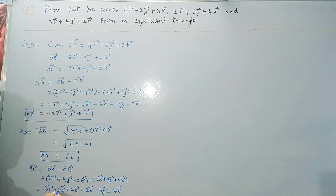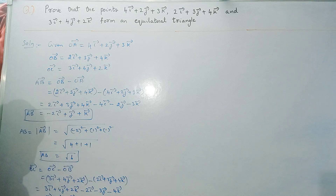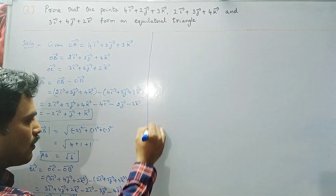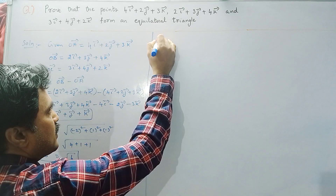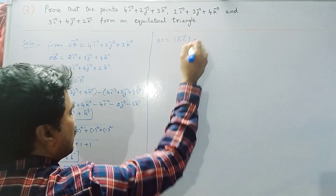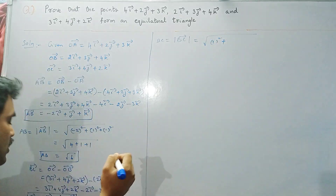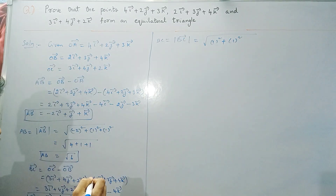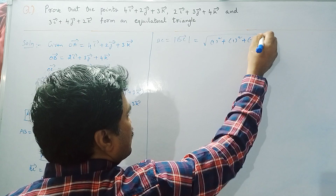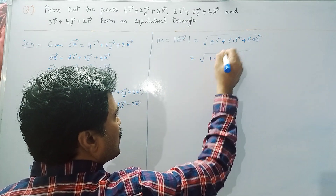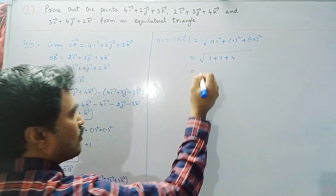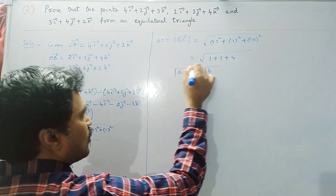Now we find the modulus of BC vector: |BC| = √(1² + 1² + (−2)²) = √(1 + 1 + 4) = √6.